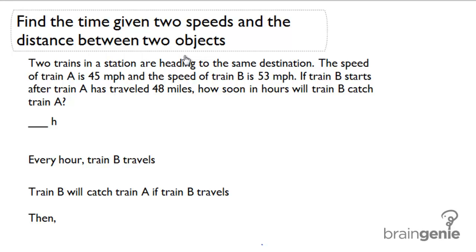Find the time given two speeds and the distance between two objects. Two trains in a station are heading to the same destination. The speed of train A is 45 miles per hour and the speed of train B is 53 miles per hour.